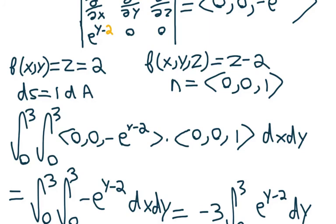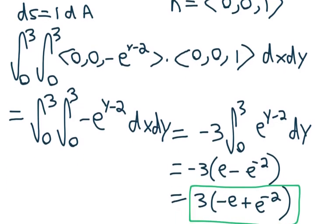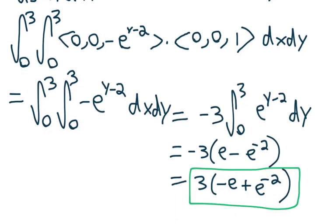Now, all we have left to do is do the double integral of our curl f times n times ds. For our dA, we are going to plug in dx dy, and we know that our x values and our y values vary from 0 to 3. We could then calculate this double integral, and it gives us 3 times minus e plus e to the minus 2.